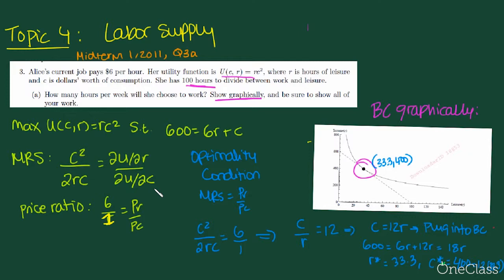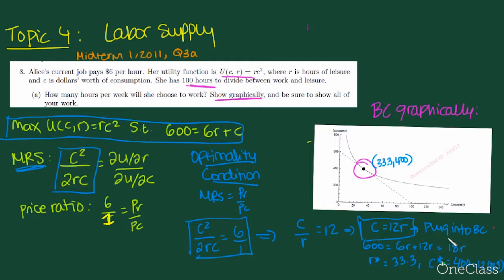So to find out how many hours per week Alice will choose to work, we're going to solve this maximization problem right here. First thing you need to do is always find the optimality condition. I used the substitution method to find it. So we've got the MRS here, which is the MRS value. Simply taking the derivative with respect to R and then with respect to C and setting it equal to the price ratio. And we have it right here.